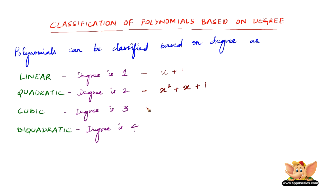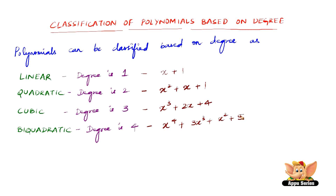An example for Cubic can be x cubed plus 2x plus 4, because the degree of x cubed plus 2x plus 4 is 3. And finally for Biquadratic, the example can be x to the power 4 plus 3x cubed plus x squared plus 5, because the degree of that expression is 4.